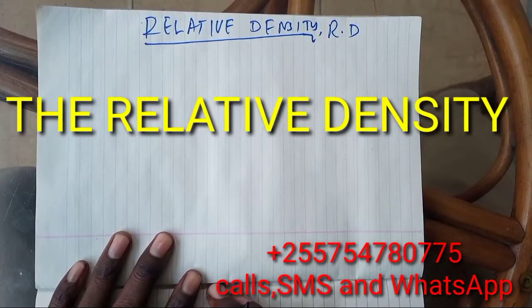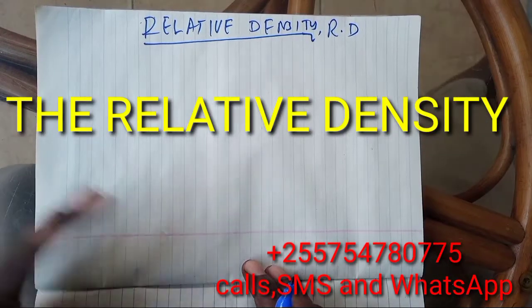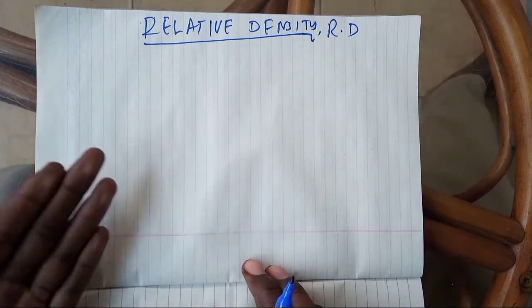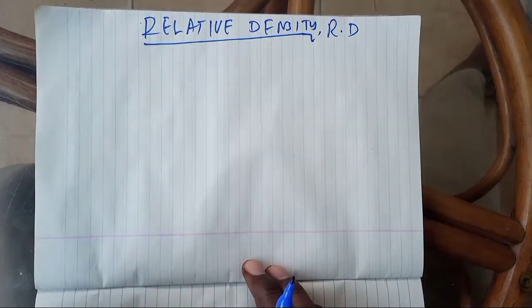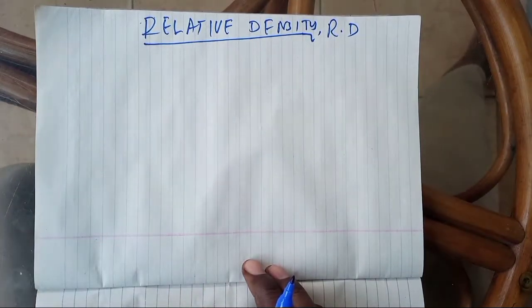Now let us talk about what we call relative density. So far we have discussed about density, density in liquid, density of regular substances and density of irregular substances.